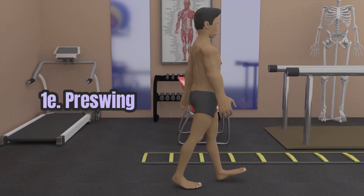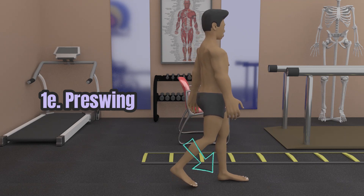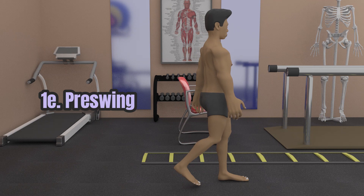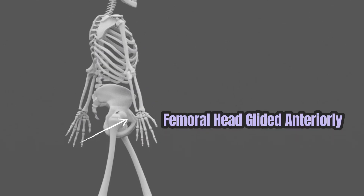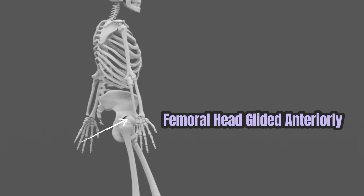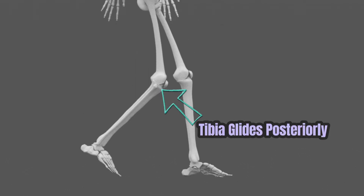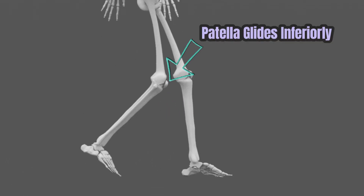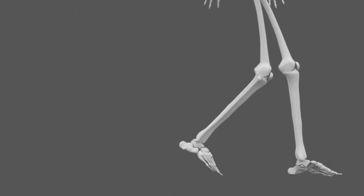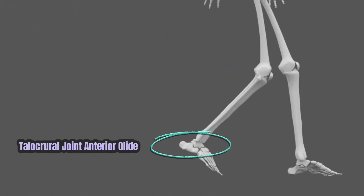The final sub-phase of the stance phase is the pre-swing. This starts when the opposite heel contacts the ground and ends at toe-off. The femoral head is still glided anteriorly to allow hip hyperextension. The tibia glides posteriorly and the patella inferiorly glides for knee flexion. At the ankle, the talocrural joint goes to an anterior glide for plantar flexion.